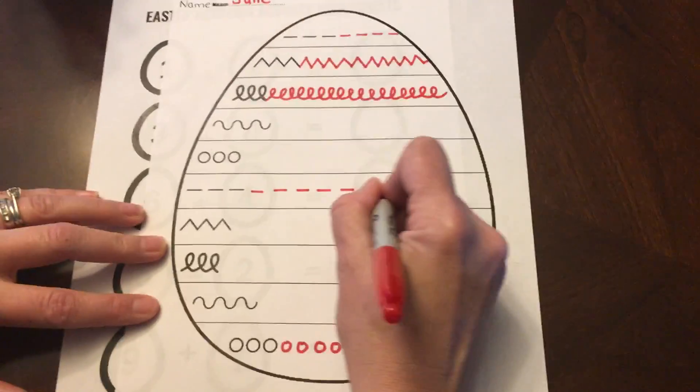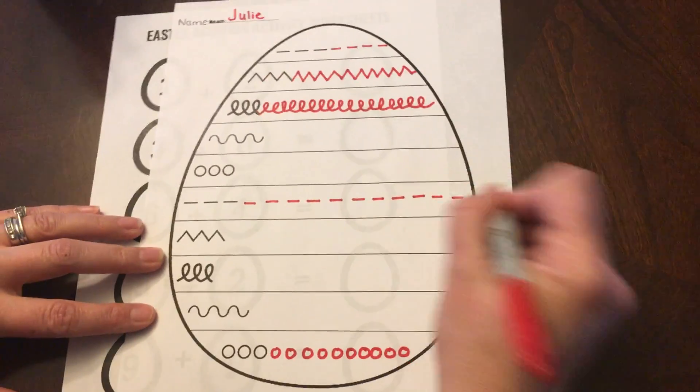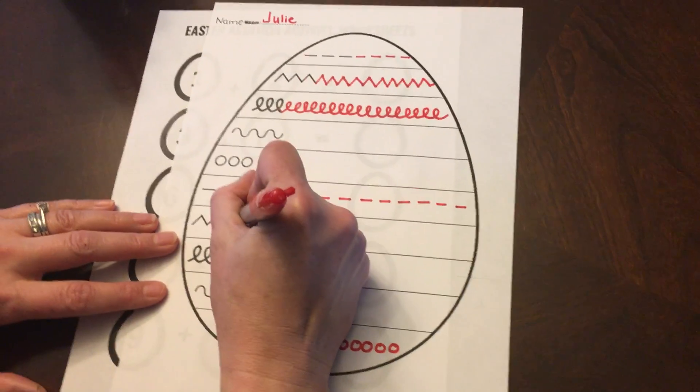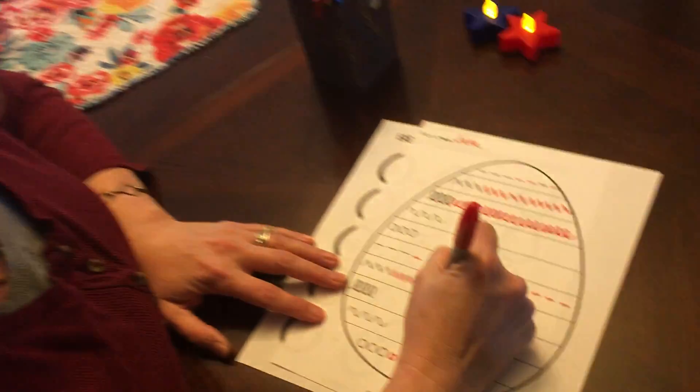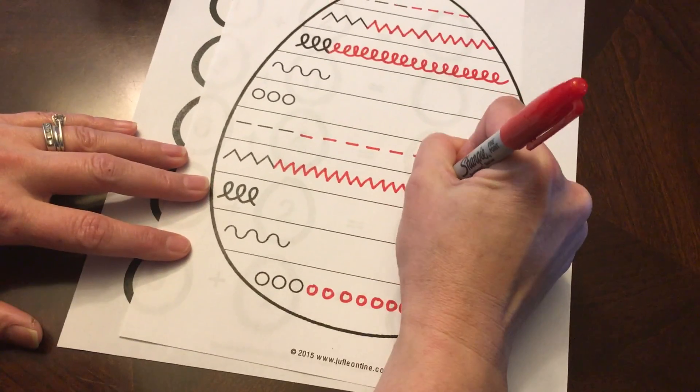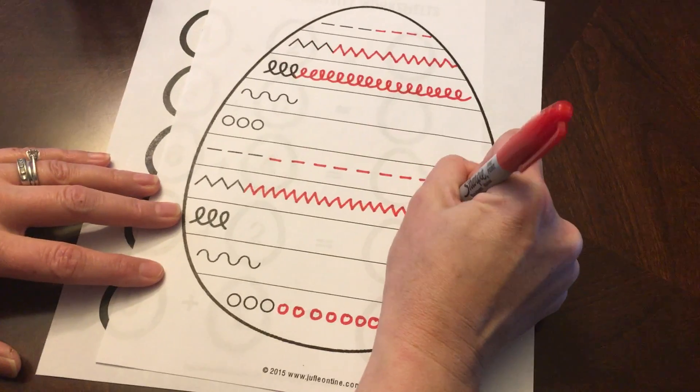You don't have to go in order. You can do the ones that you want to do first. Zigzag. I remember when we were writing in our journals in pre-K, we did zigzags in our journals before and we had fun with that. You guys did great with those, so I know you can do it.